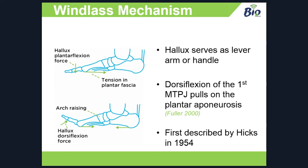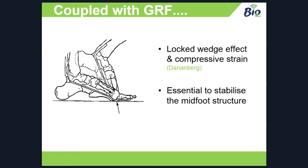Dannenberg wasn't the first person to come up with the windlass mechanism — I think it was Hicks who first mentioned it back in the 1950s. He describes the hallux a little bit like a lever or a handle: dorsiflexing the first MPJ then pulls on the plantar aponeurosis. Basically, there must be sufficient dorsiflexion available at the hallux to accommodate the heel lift during gait. As the heel comes off the ground you've got body weight coming down and ground reaction force coming up, which stiffens the mid-tarsal joints — you need that range of motion to enable everything to come together.